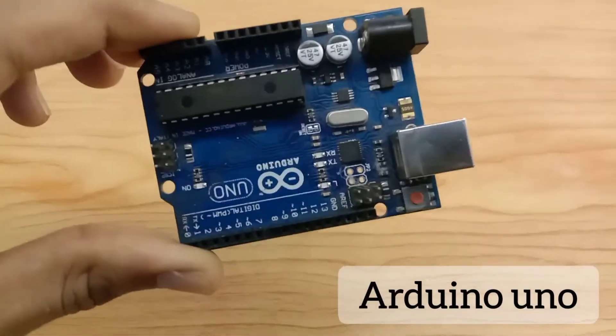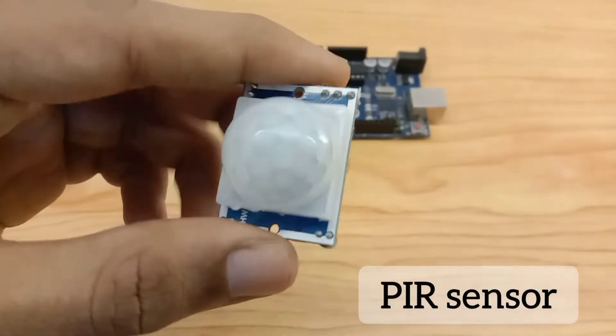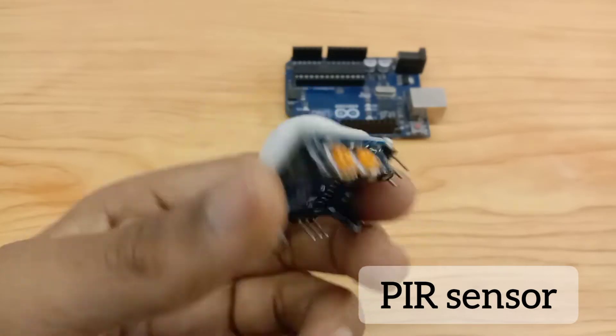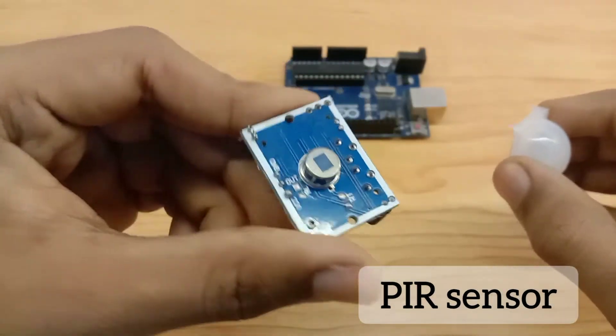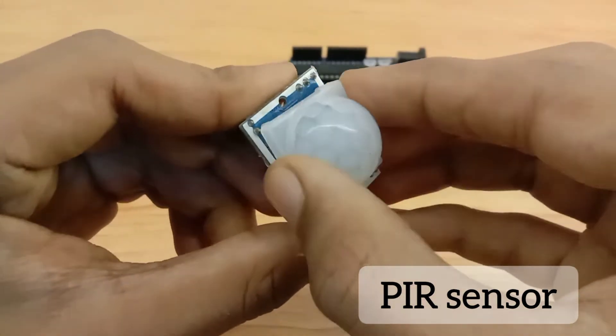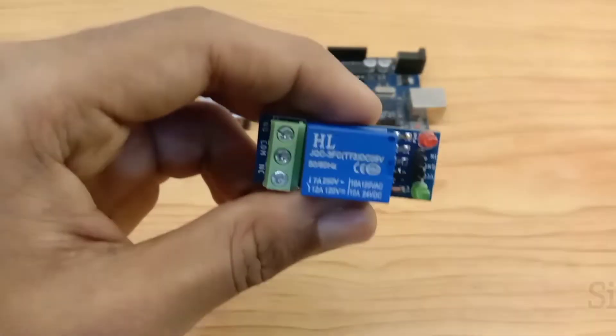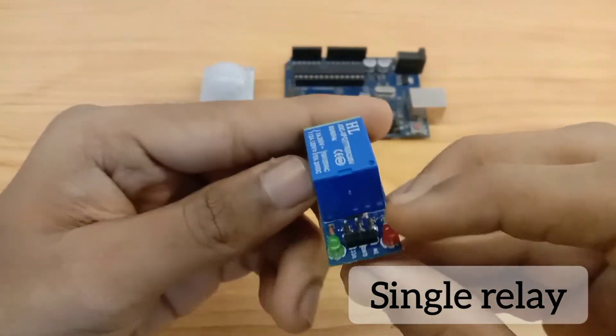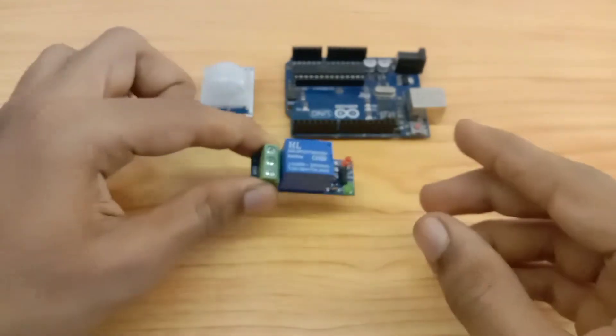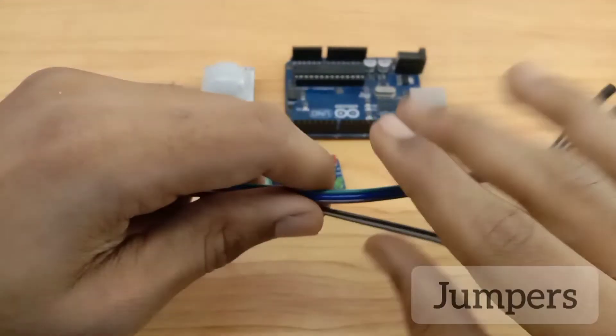For making this project, we need an Arduino Uno, PIR motion sensor, a single channel relay, and jumper wires.